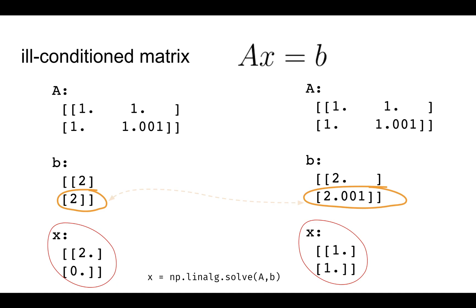For terminologies, what is an ill conditioned matrix? If we are trying to solve a set of equations Ax equals b where we have the value of A given by this matrix, we have value of b given by this matrix and we are trying to find the value of x so we get 2 and 0. Now if we make a slight change in the value of b, for example instead of 2 we changed it to 2.001, then the output values for x changed drastically. Instead of 2, 0 we now have 1, 1 as the output value.